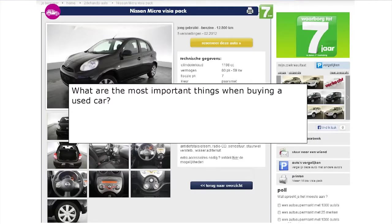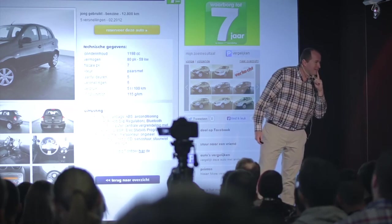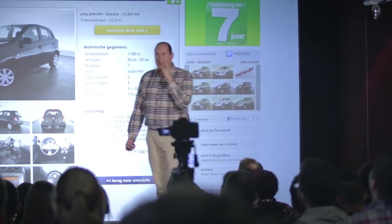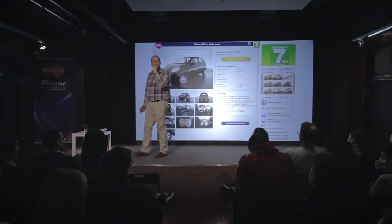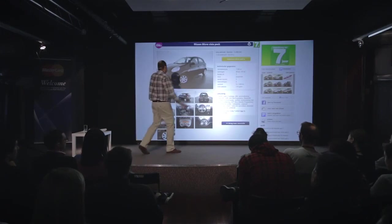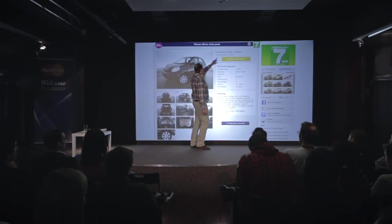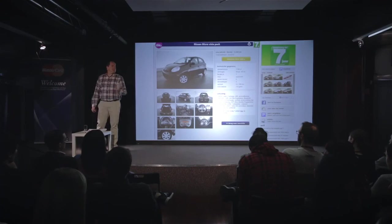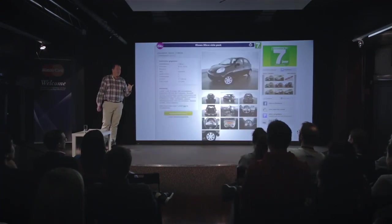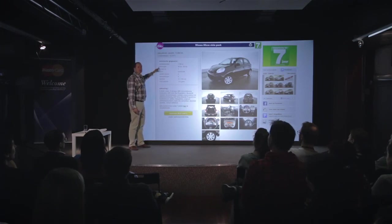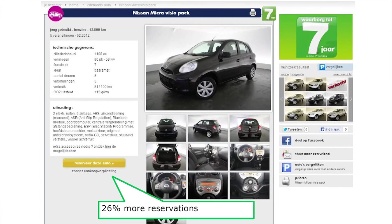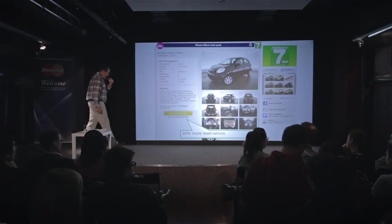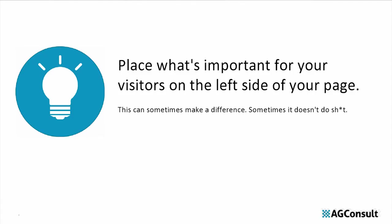When you buy a used car, the most important criteria are price, age (first year of production), and mileage. On this used car website those things were already there, but they were on the right-hand side — and we read from left to right. So we just flipped them. Now the most important information is on the left-hand side, and we saw an increase of 26 percent more people making a reservation. It doesn't always work, but you should place what's most important for your user on the left-hand side of your page in the Western world.